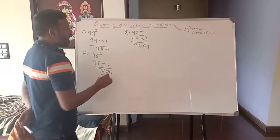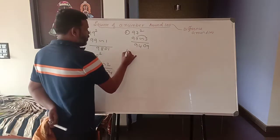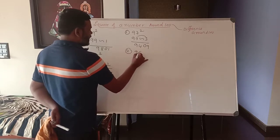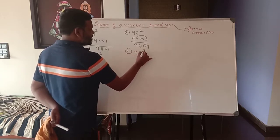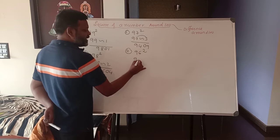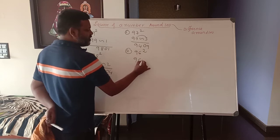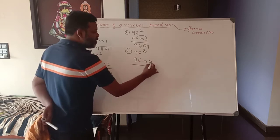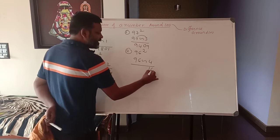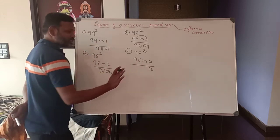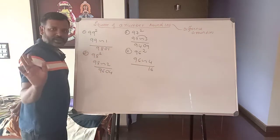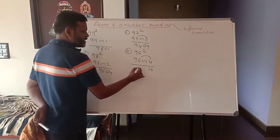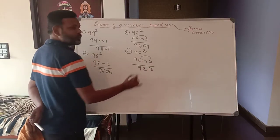Now the fourth one is 96 squared. 96 is with a difference of 4. 4 squared is 16 — put 16, it is 2 digits, nothing to worry. 96 minus 4 is 92. So the answer is 9216.